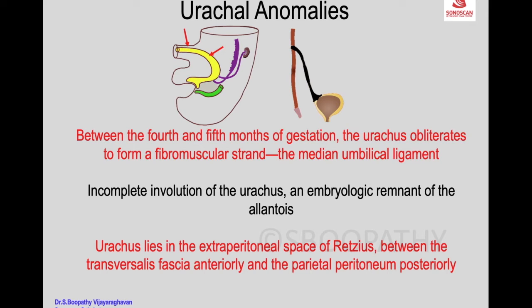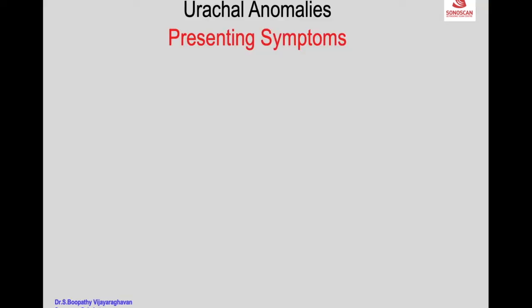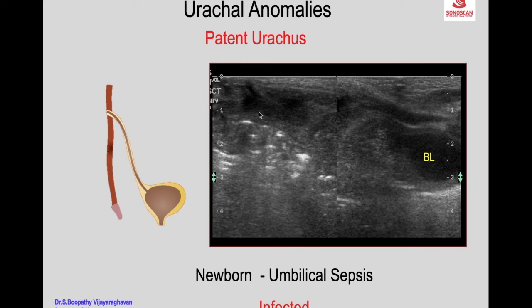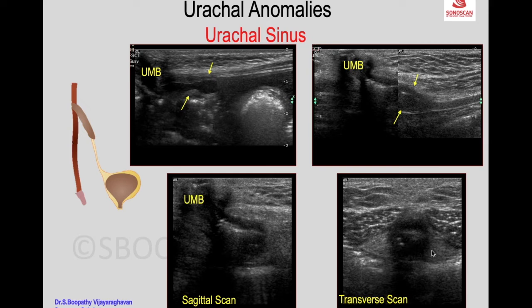In the extraperitoneal space of Retzius, between the transversalis fascia anteriorly, there can be occurred abnormalities such as abscess, infection in the urachus, urachovesical calculus, or urachal carcinoma. One urachal anomaly presenting with a suprapubic swelling in a newborn shows a tender heterogeneous tract extending from the umbilicus to the urinary bladder — a patent urachus with a vesico-umbilical fistula, presenting with umbilical micturition, and a urachal sinus with inflamed fat on either side.